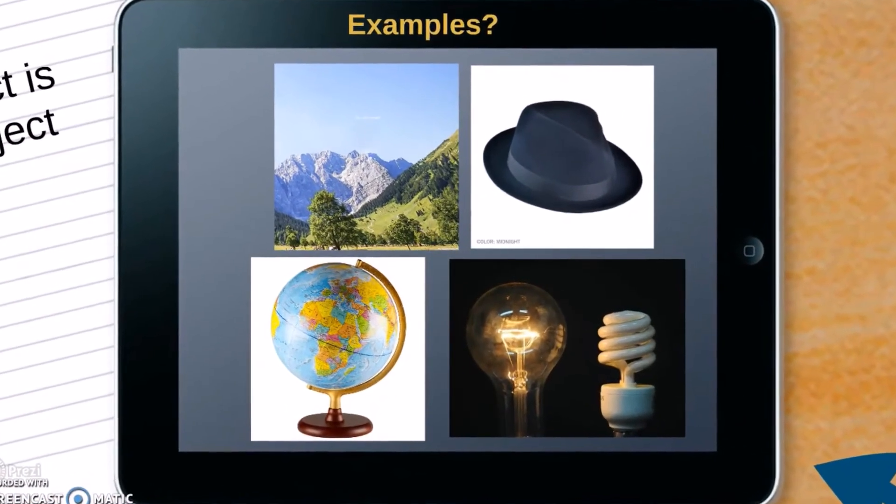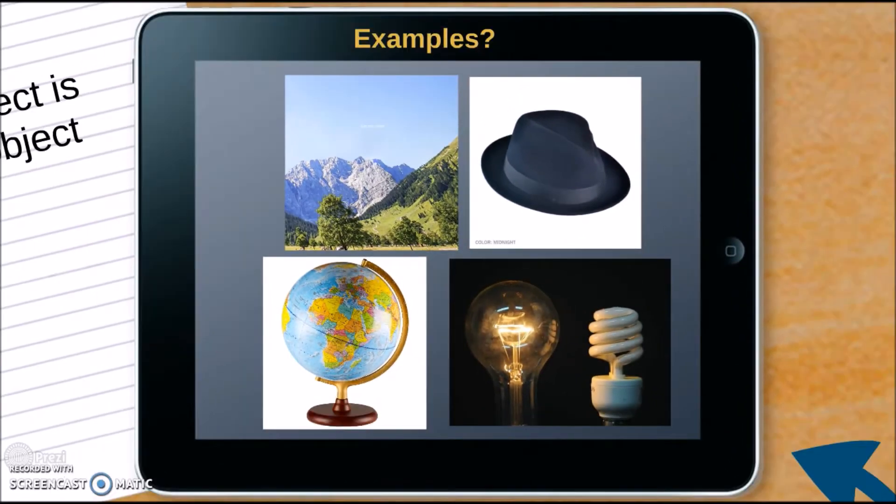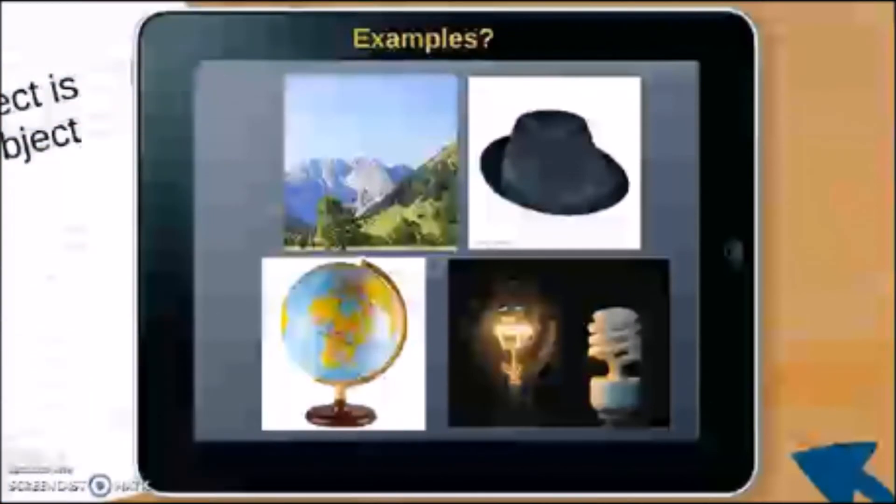Here are four images presented in the tablet. Can you spot the one that is not a technical object? If you guessed the beautiful mountains and sky and trees, that is correct. These are beautiful things found in nature, things that humans did not create. So it is not a technical object.